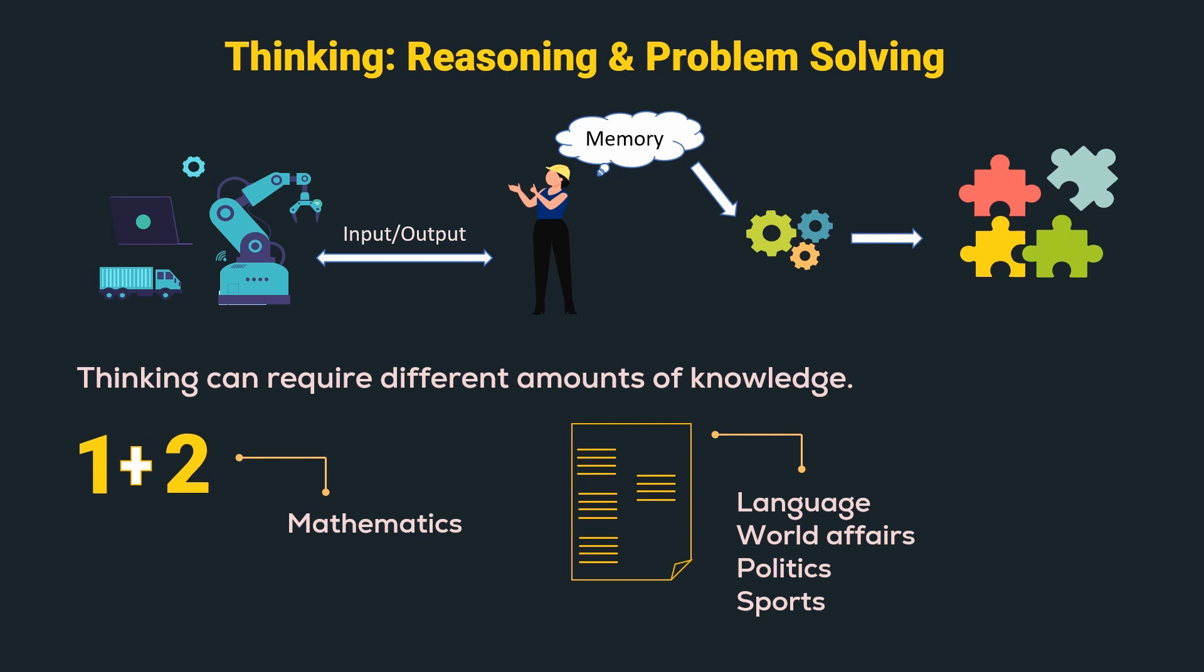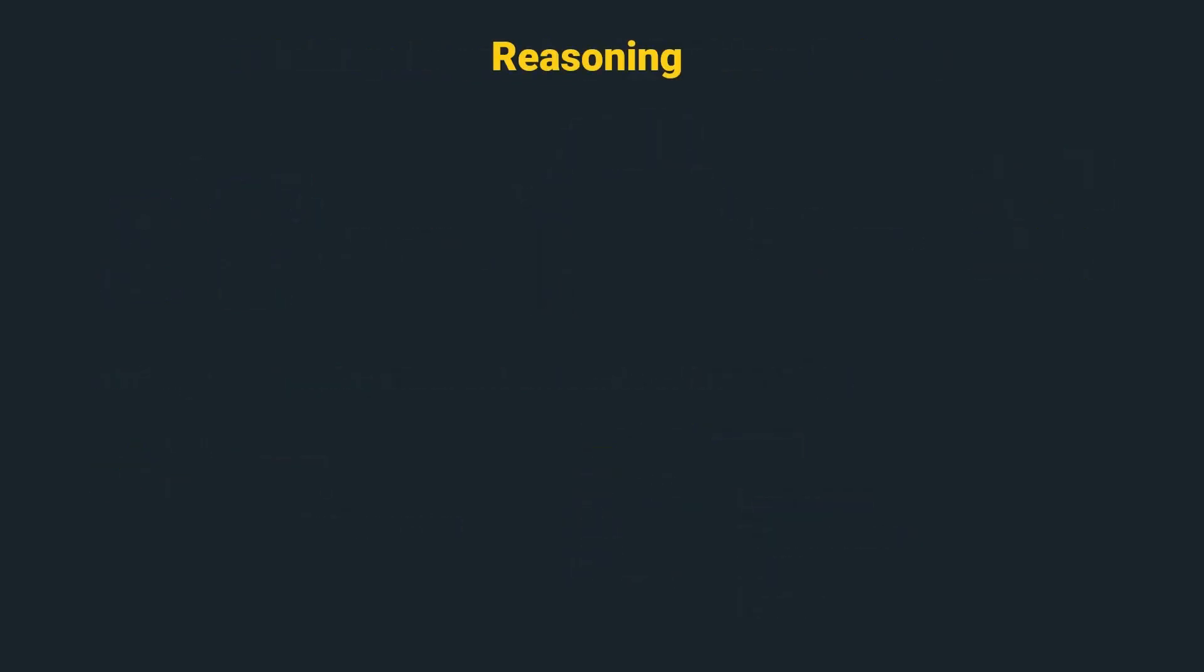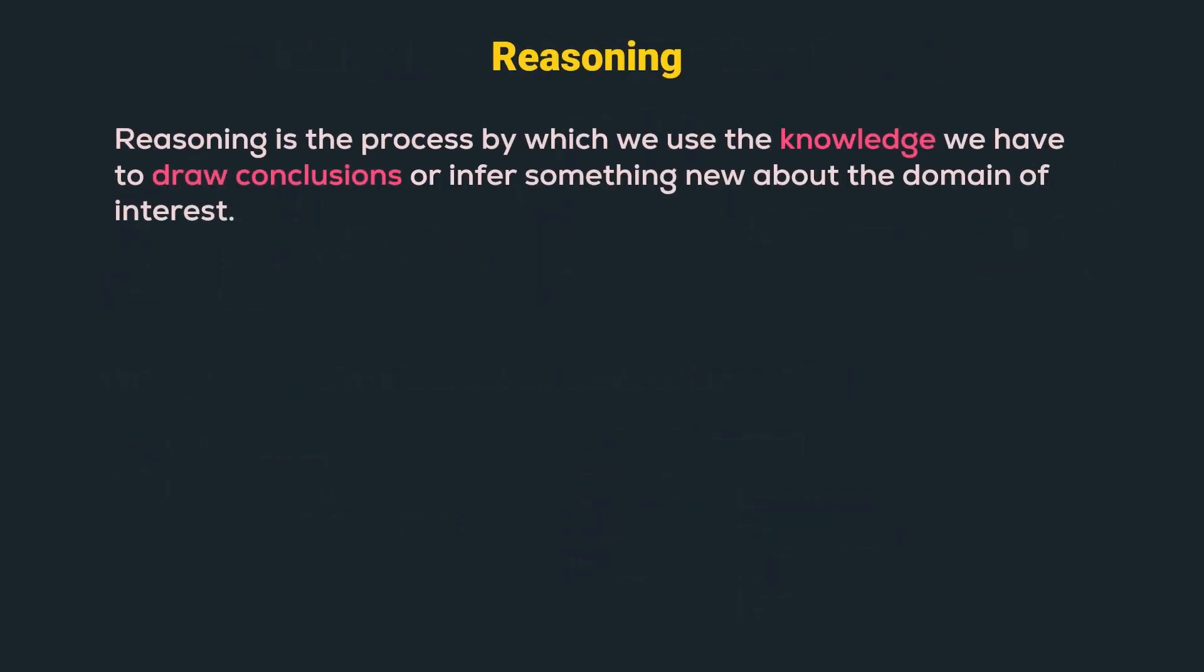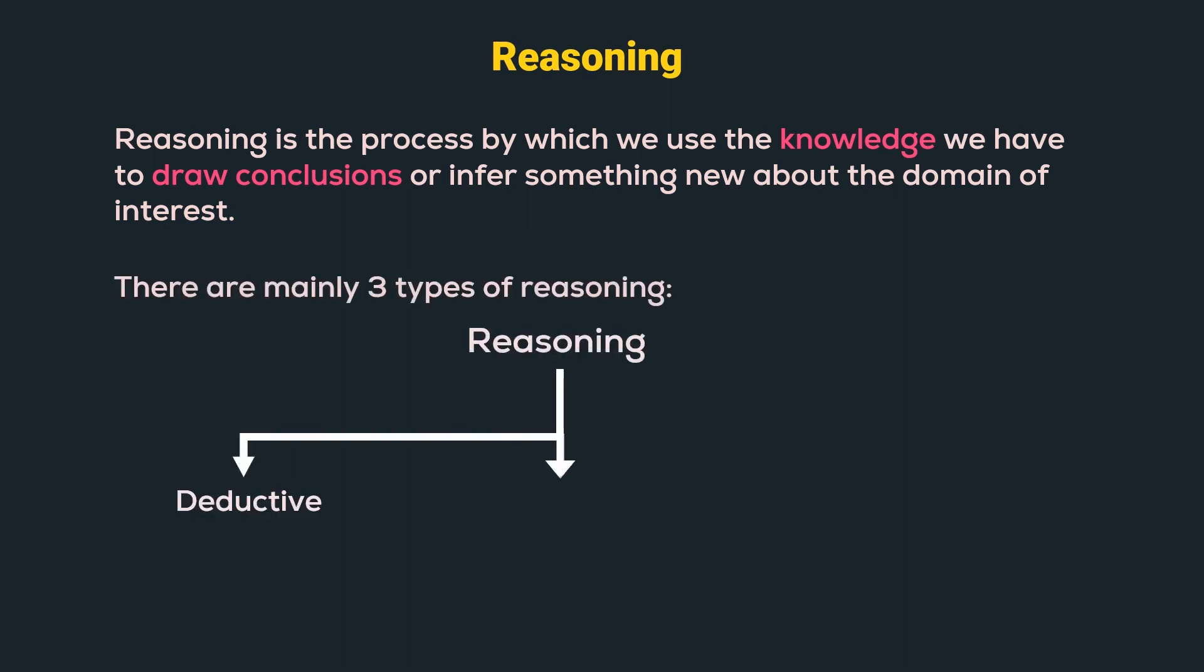So, let's get started. Reasoning is the process by which we use the knowledge we have to draw conclusions or infer something new about the domain of interest. Mainly, there are three types of reasoning which are deductive, inductive and abductive. So, let us understand them one by one.